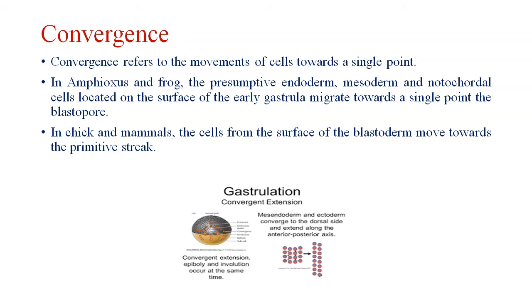First, we will talk about convergence. It refers to the movement of cells towards a single point — when cells from different parts move towards a single point. In the frog, the presumptive endoderm, mesoderm, and notochordal cells located on the surface of the early gastrula migrate towards a single point, that is the blastopore.